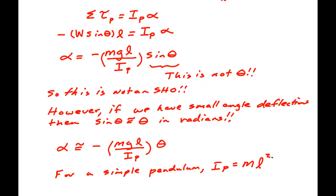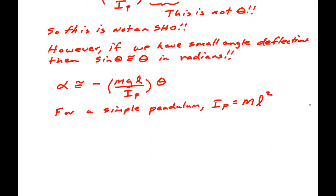So plugging that into our formula. Alpha is approximately minus M G L over M L squared theta.